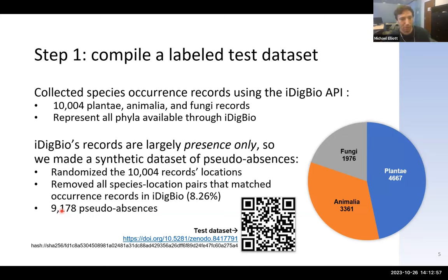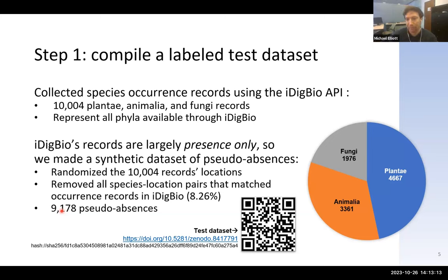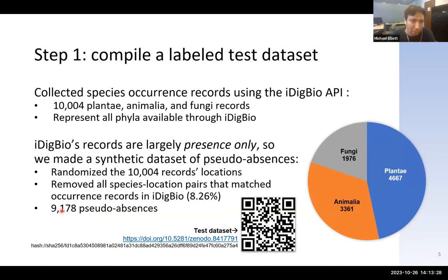To eliminate that problem, I created a synthetic dataset of pseudo-absences. I took the 10,000 records collected and assigned them random locations, assuming that a random location in the world for a given species will probably yield a 'no' answer. Of course, it depends on the species, but it's the best we could do for now. After a little cleaning, we ended up with just over 9,000 pseudo-absences.